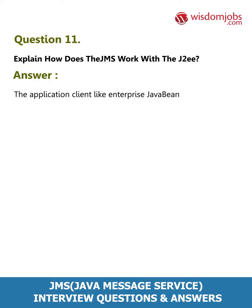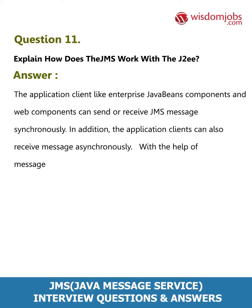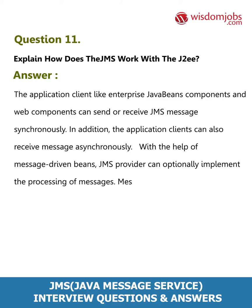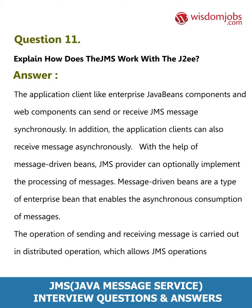Question 11: Explain how JMS works with J2EE. Answer: Application clients, Enterprise JavaBeans components, and web components can send or receive JMS messages synchronously. In addition, application clients can also receive messages asynchronously with the help of Message-Driven Beans. JMS provider can optionally implement the processing of messages. Message-Driven Beans are a type of Enterprise Bean that enables the asynchronous consumption of messages. Sending and receiving messages is carried out in a distributed operation, allowing JMS operations and database accesses within a single transaction.